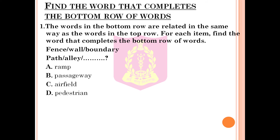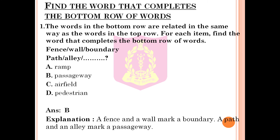The next topic under Logic and Reasoning is find the word that completes the bottom row of words. The words in the bottom row are related in the same way as the words in the top row. Question 1: Fence / Wall / Boundary. Path / LA / ___. Option A: Ramp, Option B: Passageway, Option C: Airfield, Option D: Pedestrian. The correct answer is Option B, Passageway. Explanation: A fence and a wall mark a boundary; a path and an LA mark a passageway.